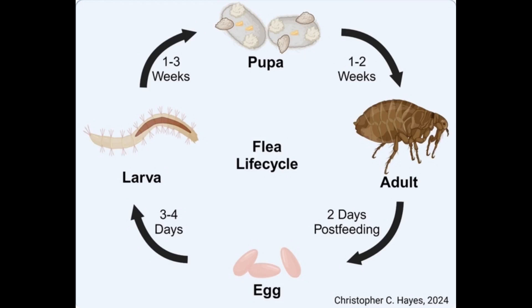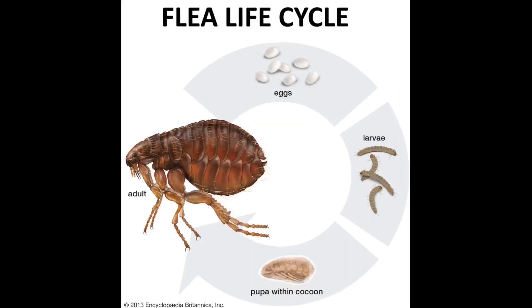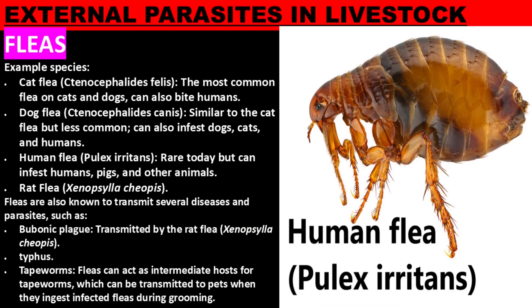Fleas go through four stages in their life cycle. Eggs are laid on the host but often fall off into the environment. The larva is a small, worm-like stage that feeds on organic debris, including adult flea feces, in the environment. The pupa is a cocoon stage in which the flea develops into an adult. The adult emerges from the cocoon to find a host and begin feeding. The entire life cycle can range from a few weeks to several months, depending on environmental conditions.